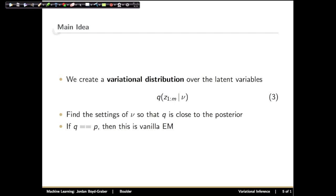To address this, what we're going to do is create a variational distribution — and this is why this method is called variational inference. A variational distribution is a distribution over all of your latent variables, parametrized by variational parameters. In this case we'll use the letter nu. And we want to choose nu, the parameters of this variational distribution, so that the variational distribution q is close to the posterior.